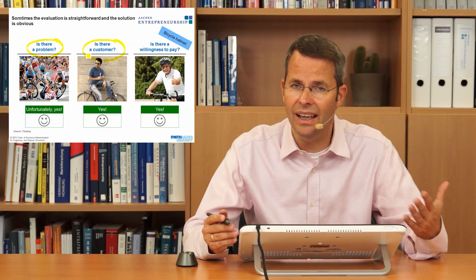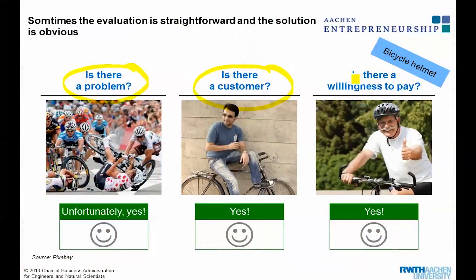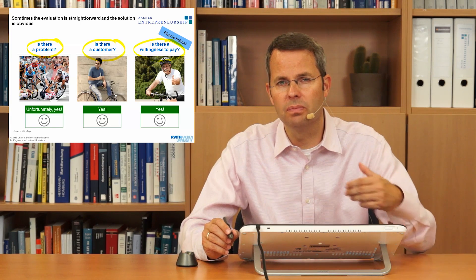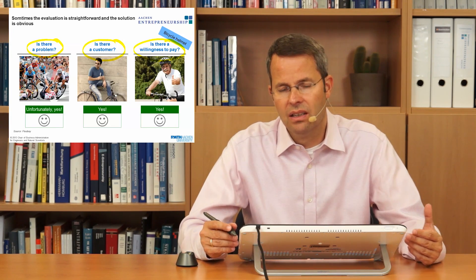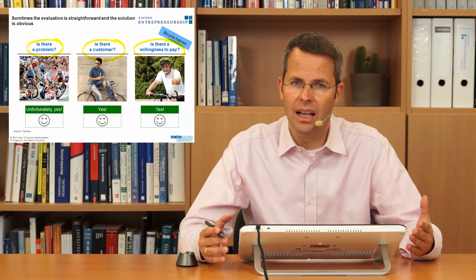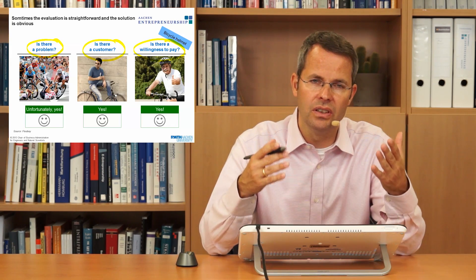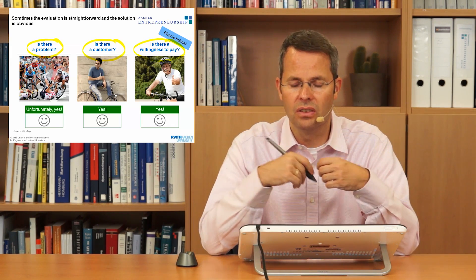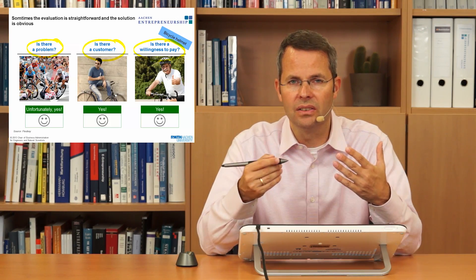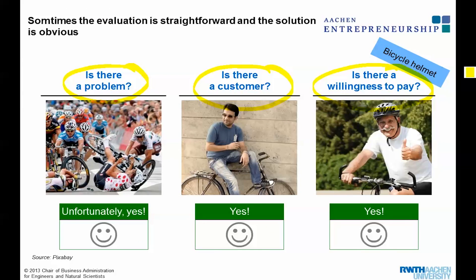And the third question is, is there a willingness to pay? Maybe this is not so easy to estimate in the first place. But in some way, if you look at what you can lose by not wearing a helmet, and how much a helmet might be, 50 euros, 30 euros, even 100 euros, there is probably a willingness to pay. So the answer for all those questions is yes.